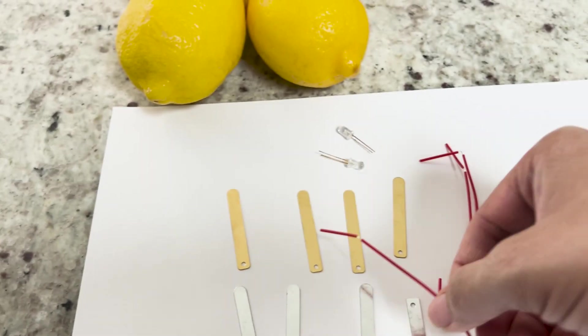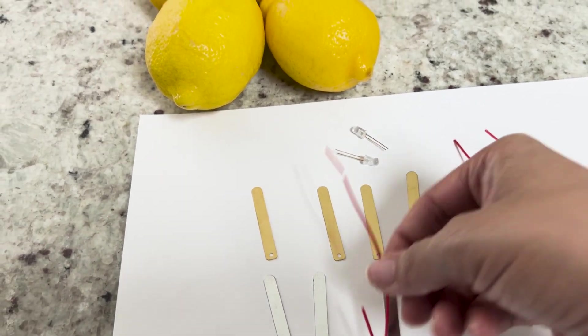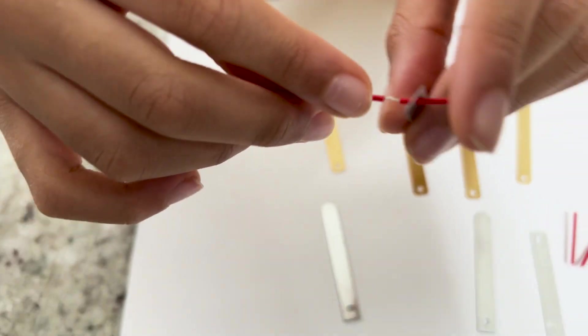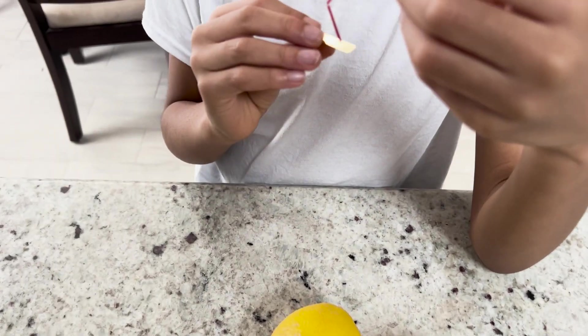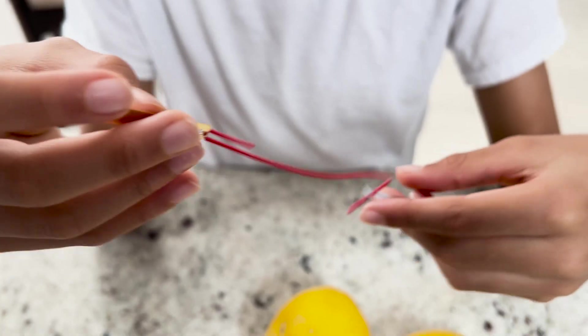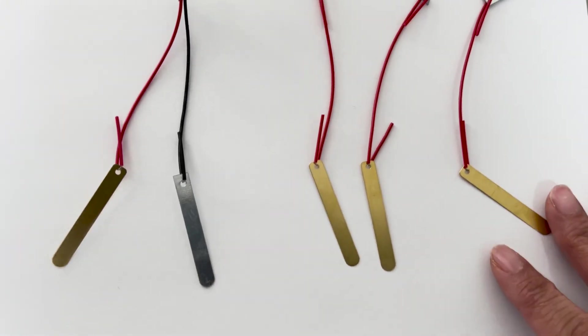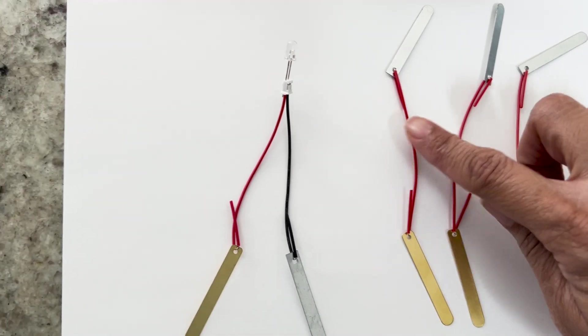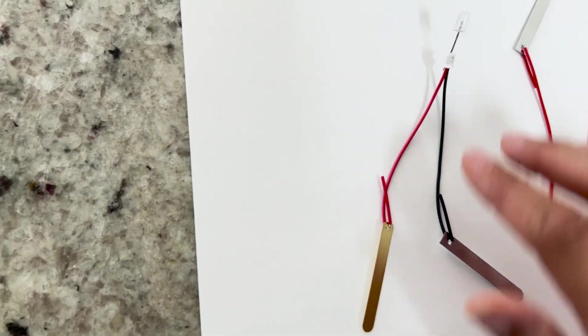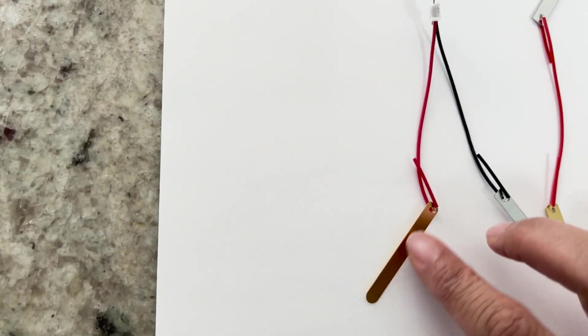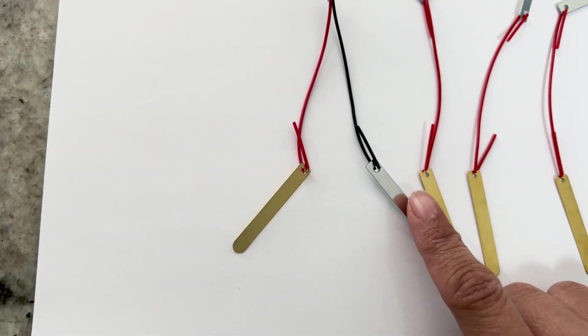So we're going to attach the plates on each side. Alright Munch, you want to try one? So take and feed it through. Awesome! And so we're going to do that with the other wires. The copper is our positive and the zinc is our negative. We attach them to the wire and here we also attach the LED to this little wire here. Again, copper being positive and zinc being negative.